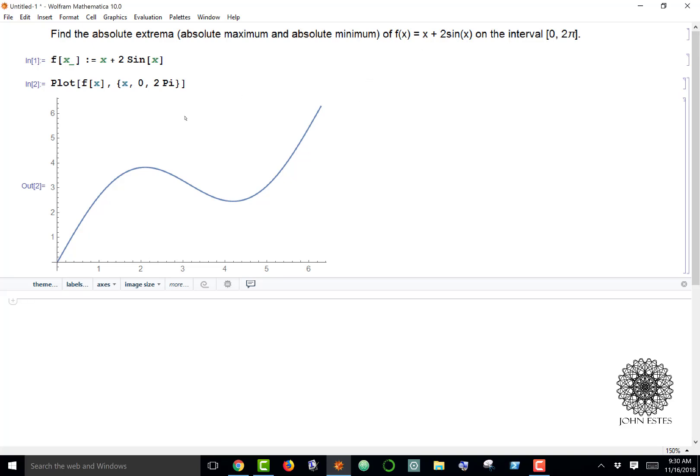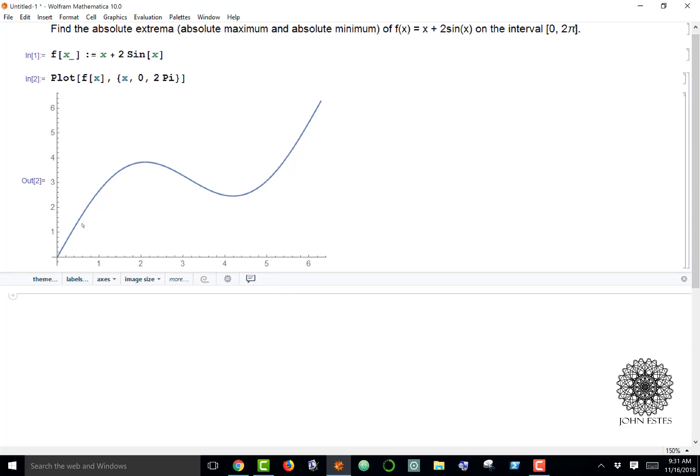I can see that for absolute min and max, this is going to be 0 and the value at 2 pi, but we're supposed to use some calculus to verify that.